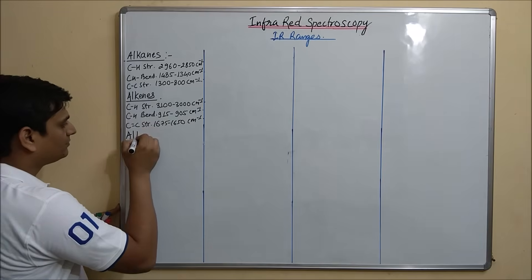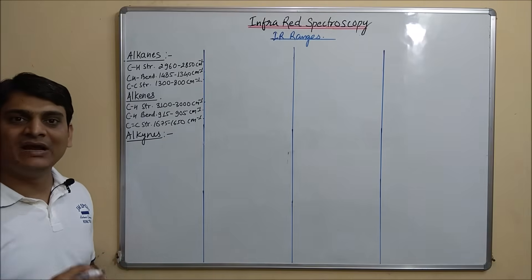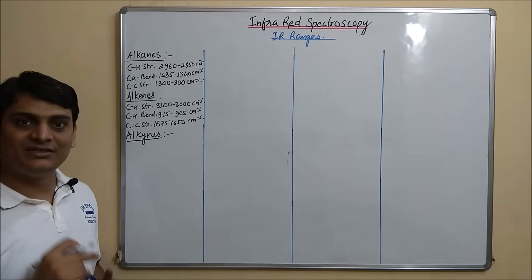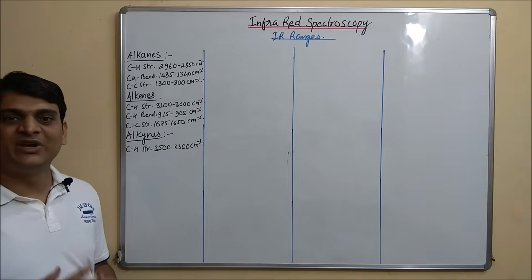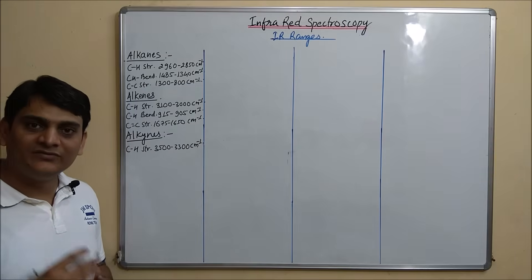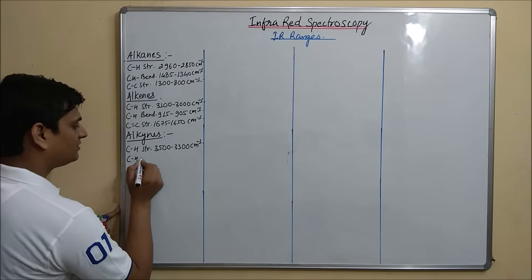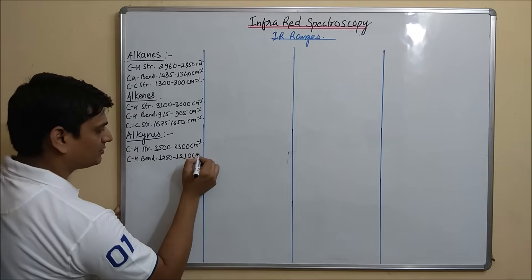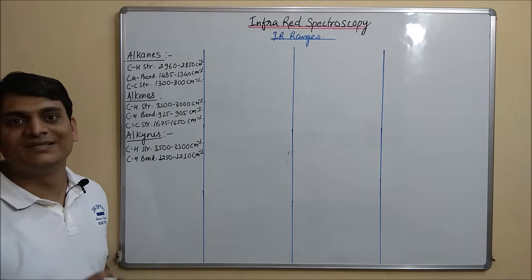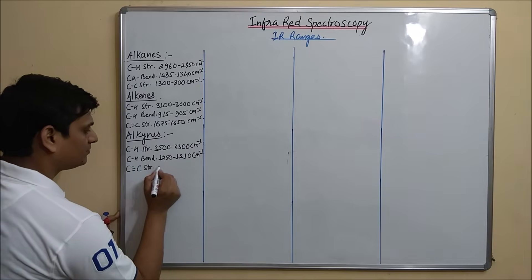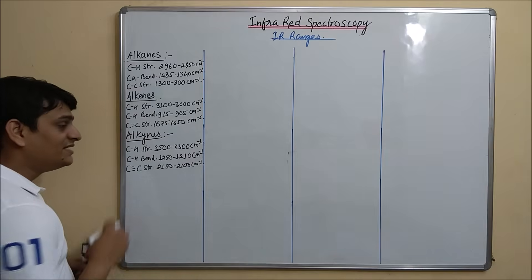Now coming to the Alkynes. For CH stretching in Alkynes it is 3500 to 3300 cm inverse. CH bending in Alkynes is 1250 to 1210 cm inverse. C triple bond C stretching is 2150 to 2100 cm inverse. So these are the various IR ranges for Alkynes.